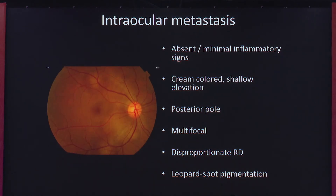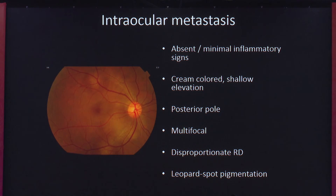What are the clues? They have very minimal inflammatory signs. The classic metastasis presents as cream-colored, shallow elevation, multiple lesions involving the posterior pole. Metastasis always has a disproportionately large amount of retinal detachment in contrast to the size of the lesion, and may have some leopard spot pigmentation. But as you could see in the last four cases, metastasis doesn't always present classically — it can be very atypical.